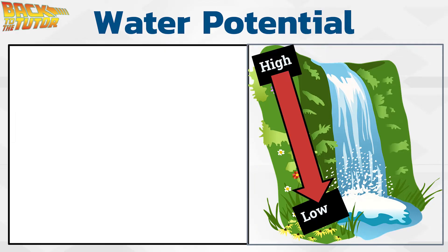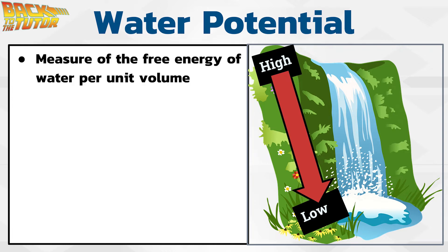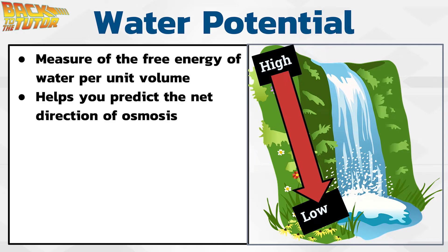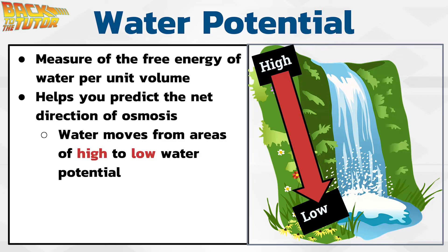So how can we predict where water molecules will move using numbers? This brings us to water potential. The technical definition of water potential is a measure of the free energy of water per unit volume relative to pure water, but you don't really need to worry about that. What's really important is knowing that it is a number that helps you predict the net direction of osmosis. Water moves from areas of high water potential to areas of low water potential. The way I typically like to explain this is using a waterfall — the water moves from a high area to a low area, just like how water moves from high to low water potential.